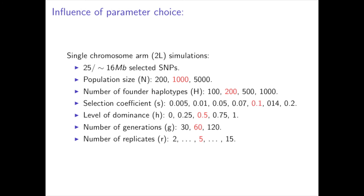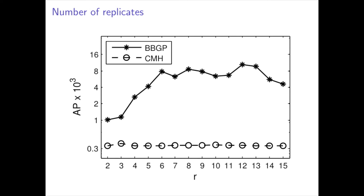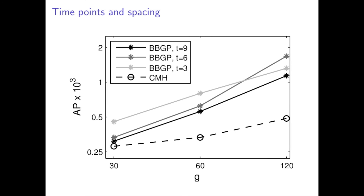In order to investigate the influence of parameter choice, we carried out an extra simulation on a single chromosome arm with different parameter settings. Simulation results show that average precision increases as the population size n is increased. As the ratio of the number of founder haplotypes over the population size gets larger than a half, average precision drops, probably due to the fact that the selected SNPs with multiple linked backgrounds start to compete with each other. We also observed an increase in the performance of BBGP as the number of replicates is increased, while we did not observe a large improvement in the performance of CMH. We also examined the performance with increasing the length of the experiments up to 120 generations. Average precision rises rapidly for longer experiments where more recombination events can happen, which lets the linked sites evolve independently.